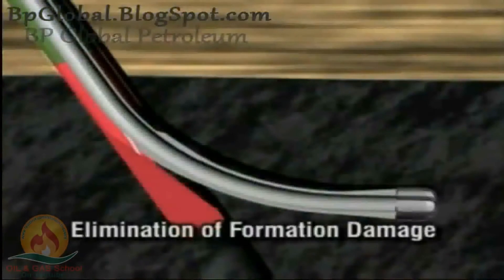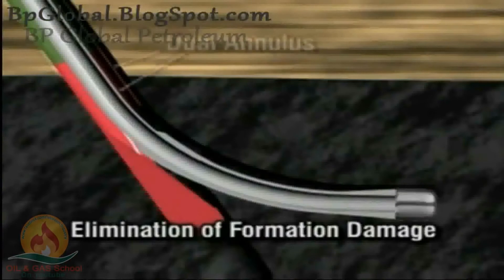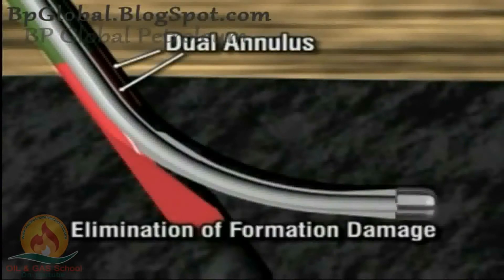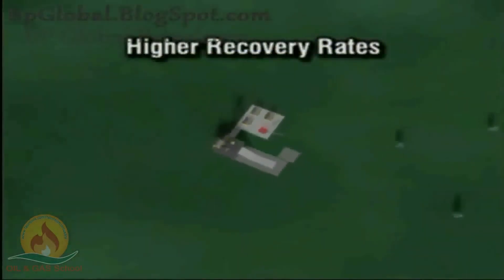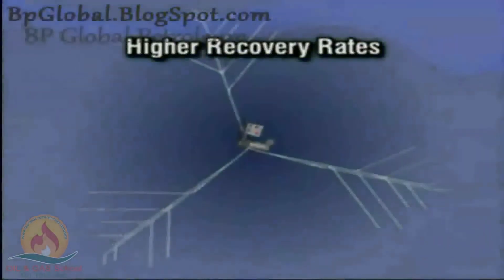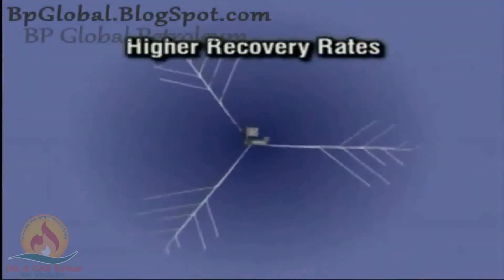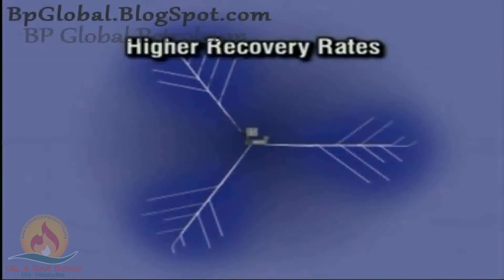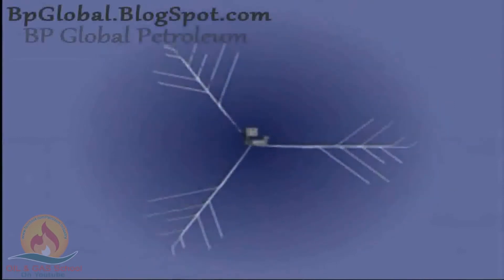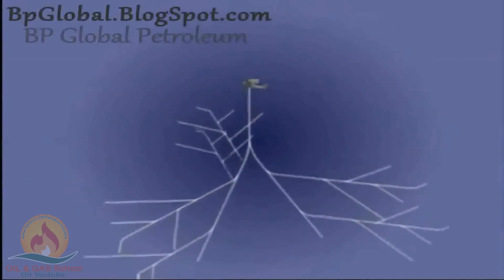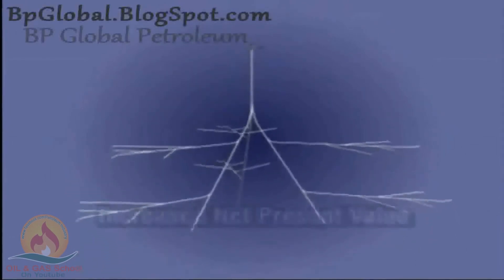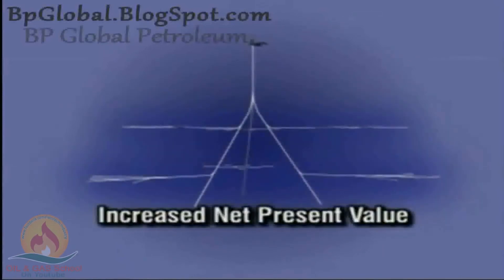Elimination of formation damage is achieved by utilizing under-balanced drilling with a dual injection annulus system that isolates the damaging drilling fluid away from the formation. Higher recovery rates are due to greater aerial sweep, precise placement of boreholes within the coal seams, and the complete elimination of formation damage created during the drilling process. The end result is significant cost reductions and higher yields of methane gas in a shorter time period, all of which adds up to increased net present value of the property.